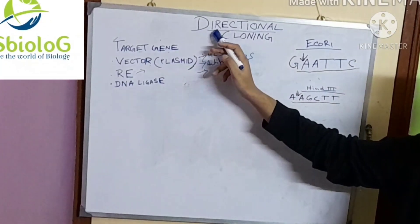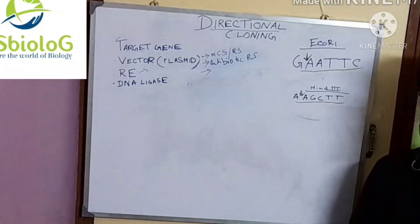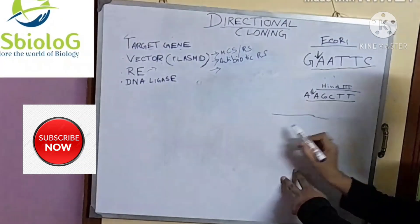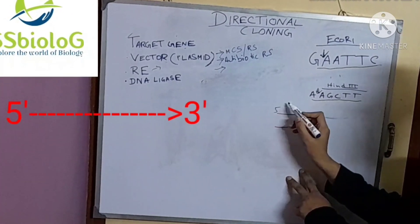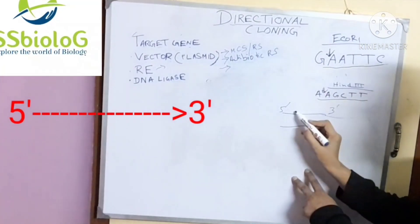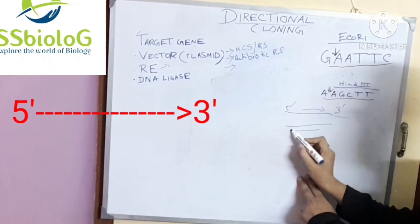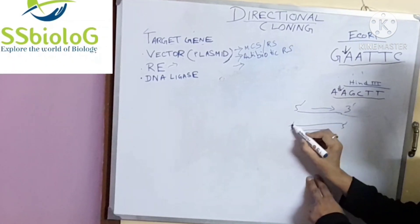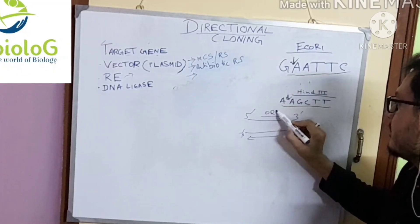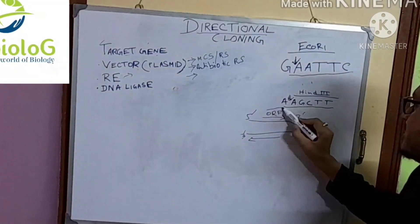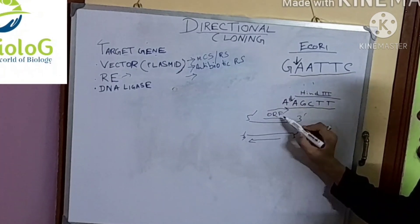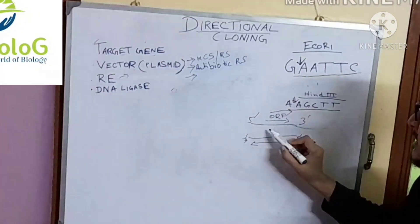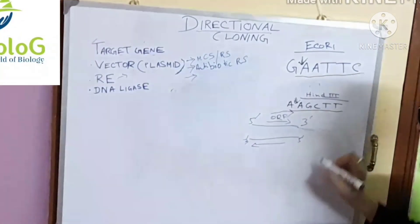Here I have mentioned that it is directional cloning. Why is it called directional cloning? We all know that DNA is a double helix and it has a direction of 5' to 3'. It is also here 5' to 3' — it has a direction of 5' to 3'.